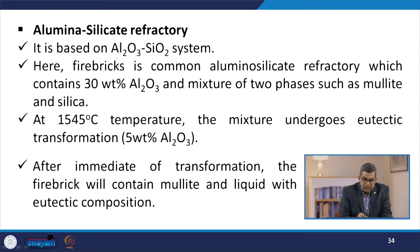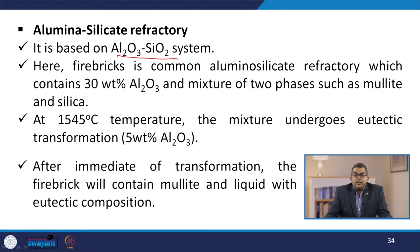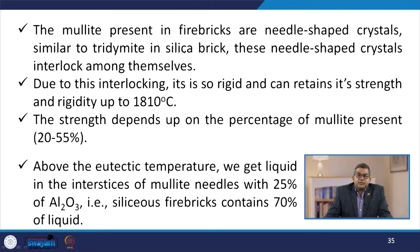Alumina silicate refractories are based on the Al2O3-SiO2 system. Fire bricks are common alumina silicate refractories containing 30 wt% Al2O3 — a mixture of two phases: mullite and silica. At 1545°C, the mixture undergoes eutectic transformation at 5 wt% Al2O3. After the transformation, the fire brick contains mullite and liquid with eutectic composition. The mullite present in fire silica bricks forms needle-shaped crystals similar to tridimite in silica bricks, which interlock among themselves, making the structure rigid and capable of retaining strength and rigidity up to 1810°C.